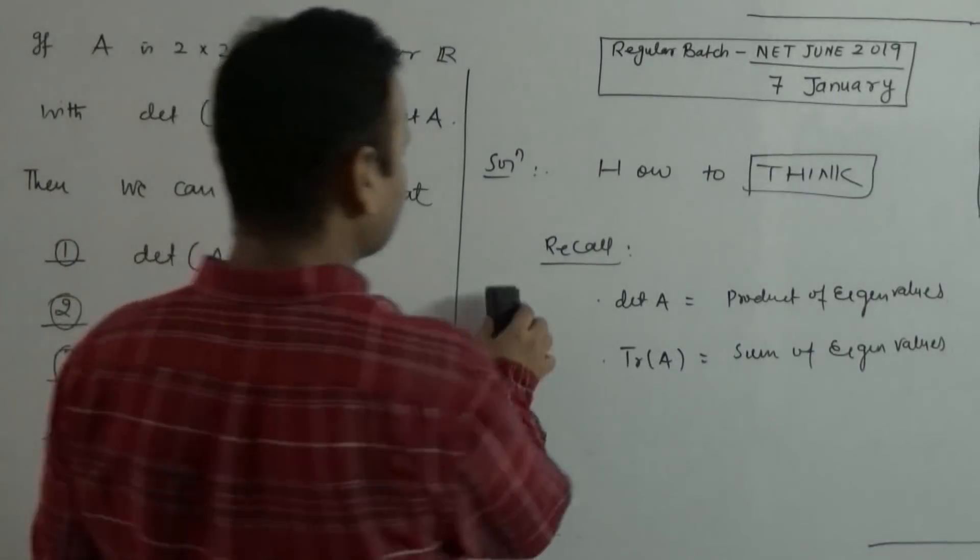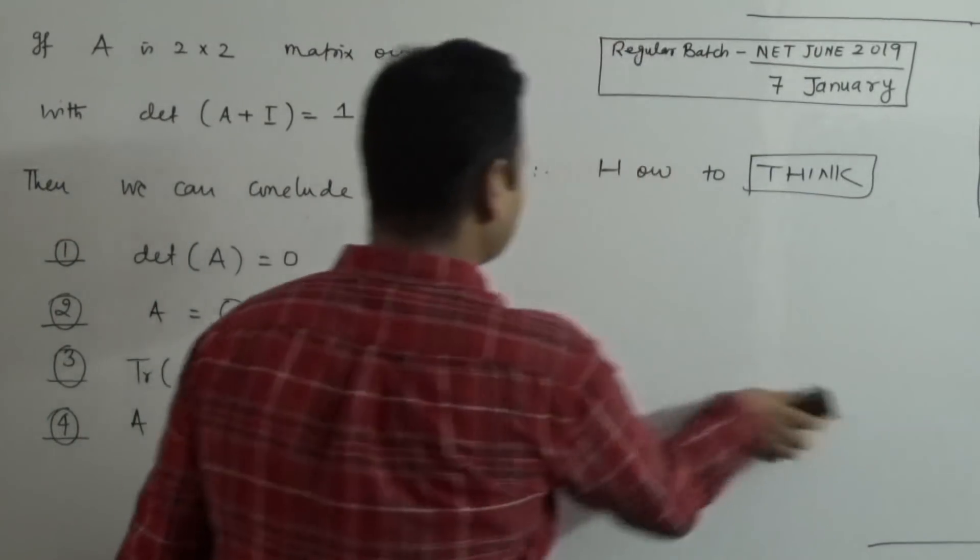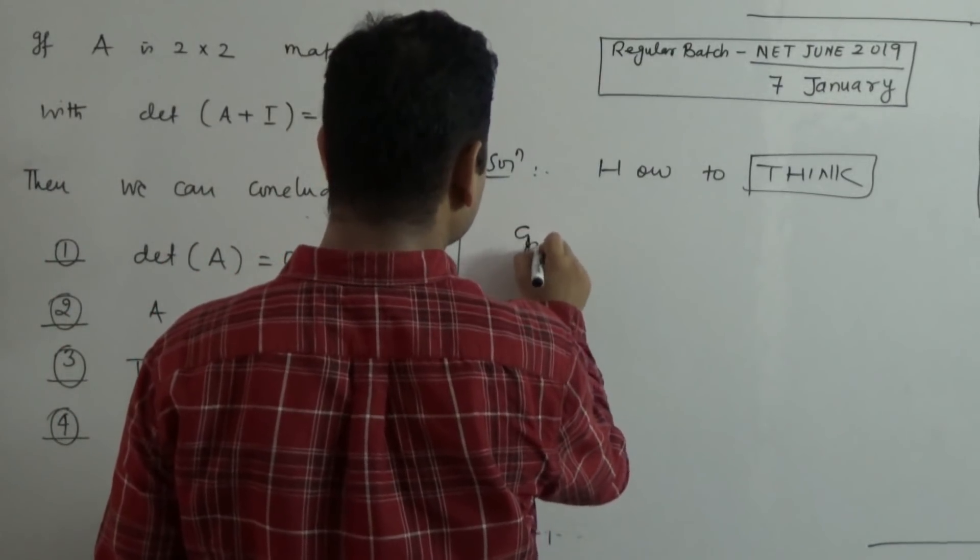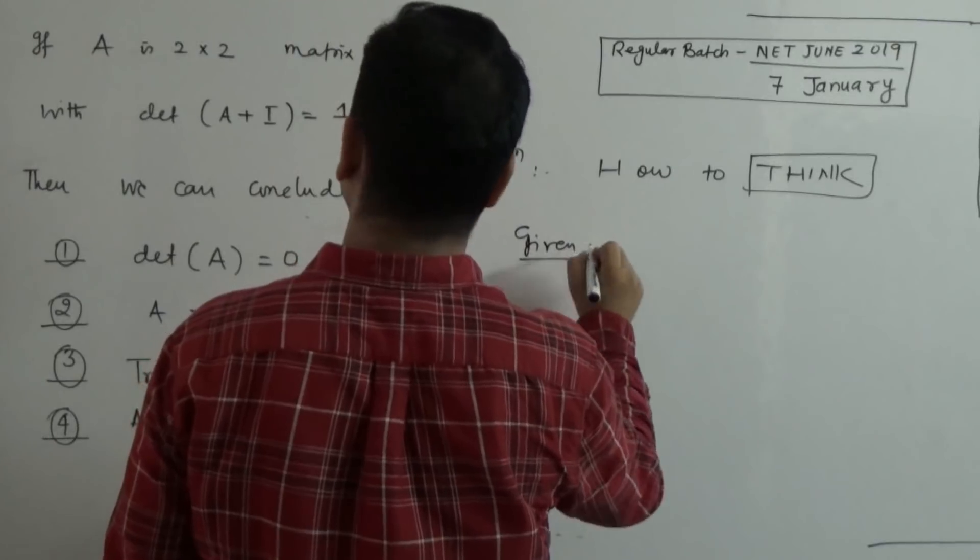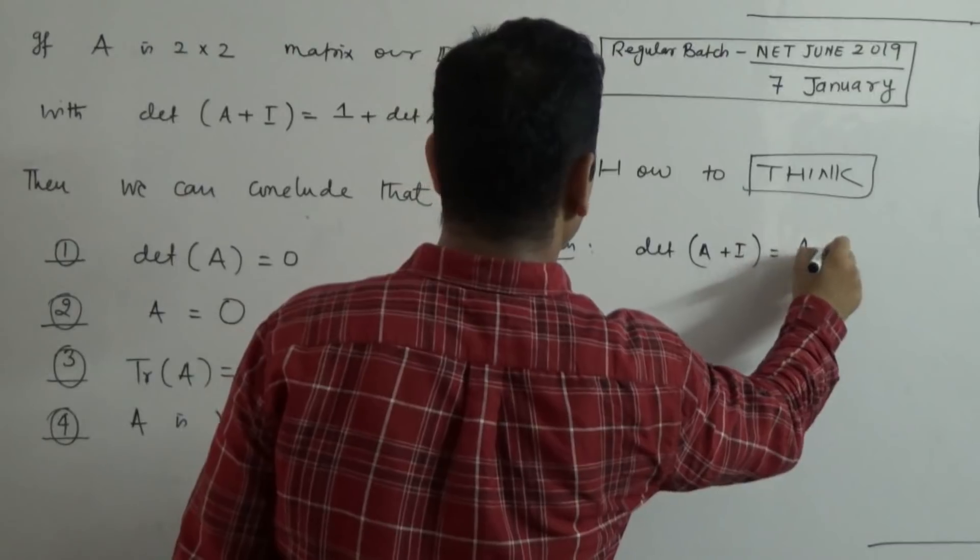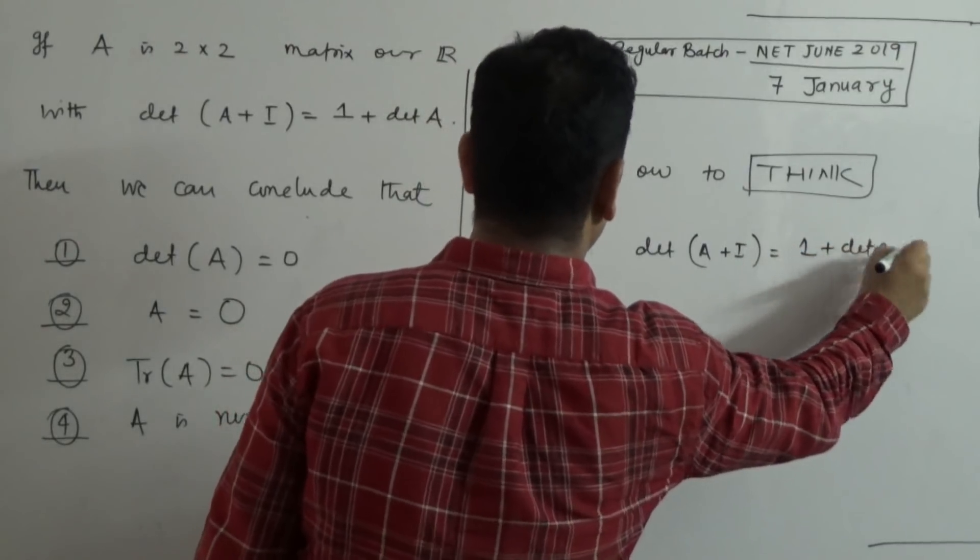This is the condition given. Let me write here. Now, what is given? Given is, determinant of A+I is nothing but 1 plus determinant of A.